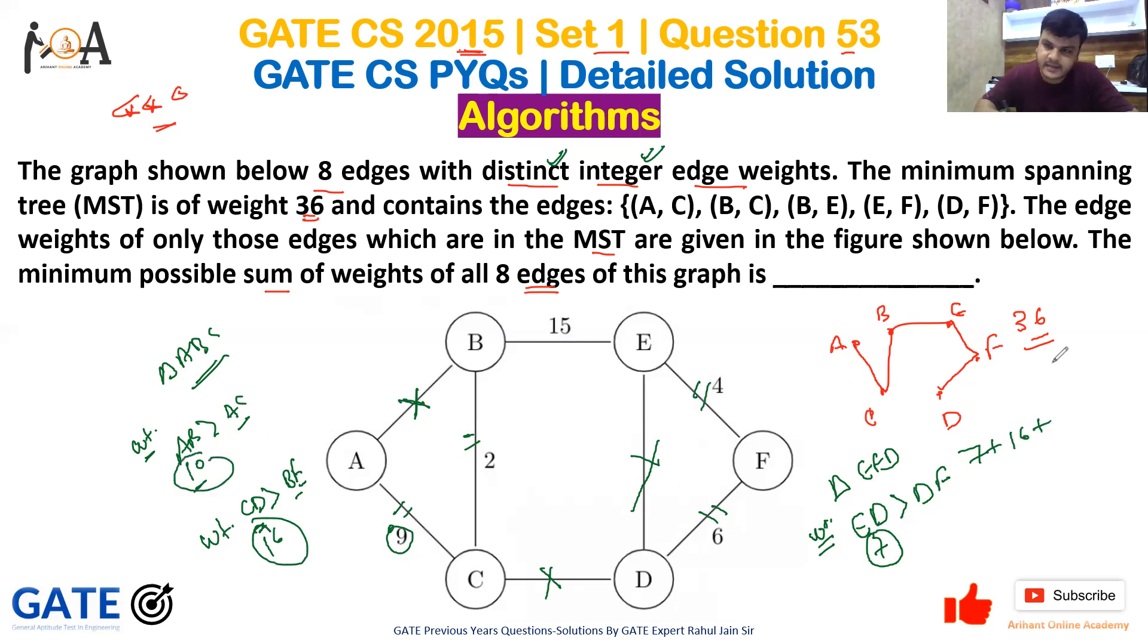If you add them: 16 plus 10 is 26, plus 7 is 33. We are asked for the minimum possible sum of all edges, so 36 plus 33 gives us 69. So 69 is the correct answer for this GATE question.